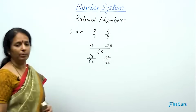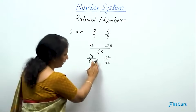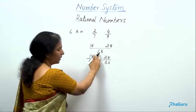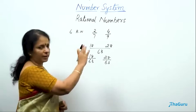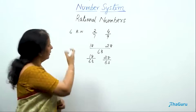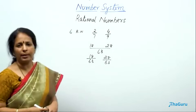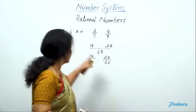Between 18/63 and 28/63, we already have numerators 19, 20, 21, 22, up to 27. All those numbers lie between them — that is more than 6 rational numbers available to us.